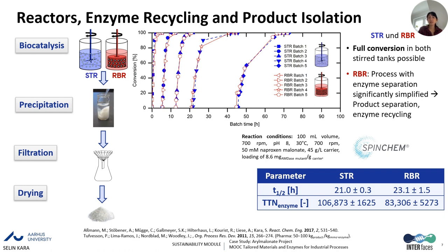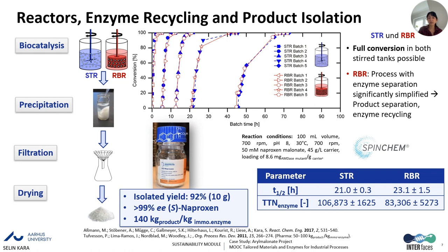At the end, we collected the products synthesized in different reactors. We precipitated the product, filtered and dried it to obtain a white powder, achieving about 10 grams of product with a very high yield of 92%. The S-naproxene synthesized had more than 99% enantiomeric excess, achieved using this highly S-selective mutant. We calculated the productivity to be 140 kg of product per kg of immobilized enzyme, which is very high compared to benchmarking numbers published in biocatalysis reviews. We can truly claim that we developed a highly productive process.